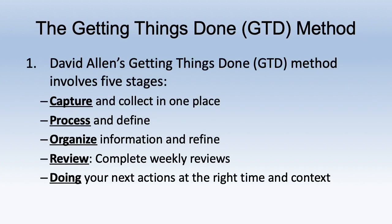Many people struggle to get things done or struggle with procrastination because they're overwhelmed. David Allen suggests the Getting Things Done (GTD) method, which involves five stages: first, capturing and collecting all tasks in one place; then processing and defining what those are; organizing the information into categories; reviewing each week what you need to do; and then doing your next actions at the right time and context.